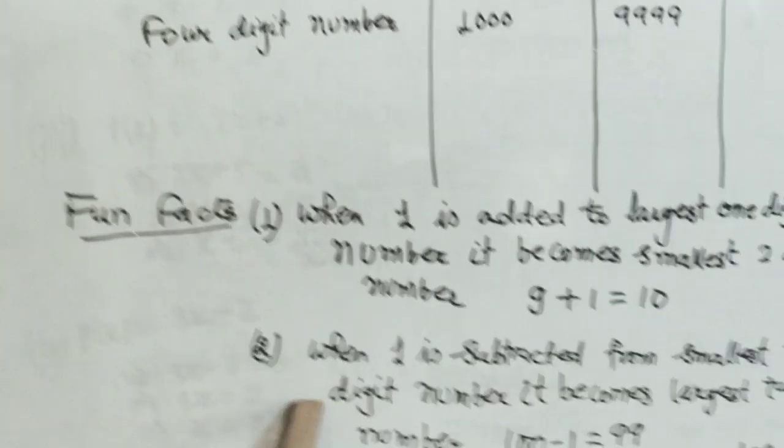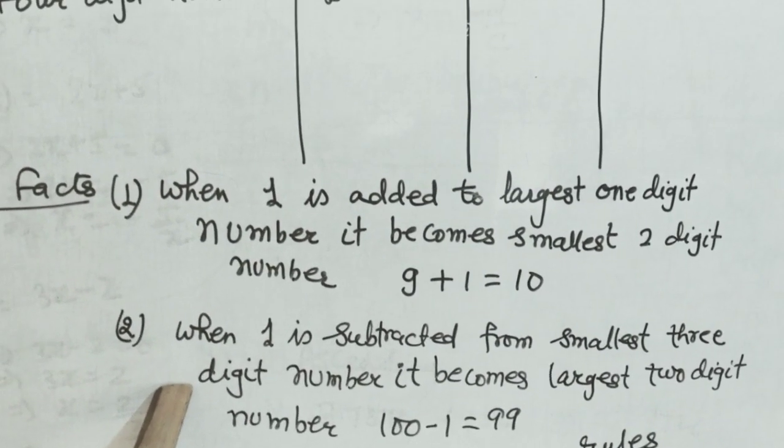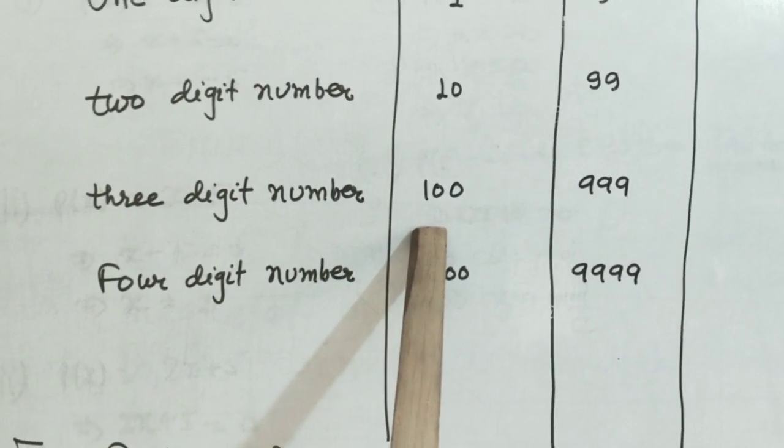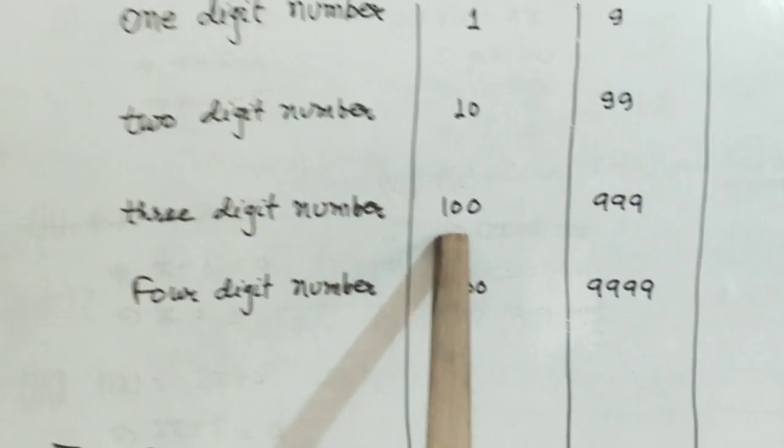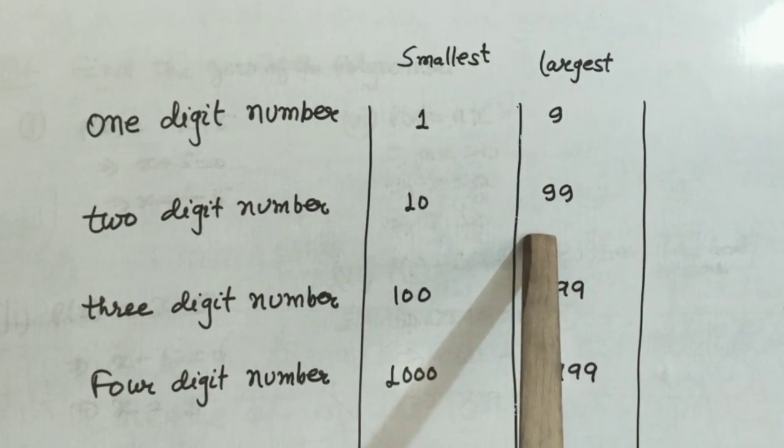Similarly, when 1 is subtracted from the smallest 3 digit number, it becomes the largest 2 digit number. What is the smallest 3 digit number? 100. And if you subtract 1 from it, you obtain 99. And 99 is the largest 2 digit number.